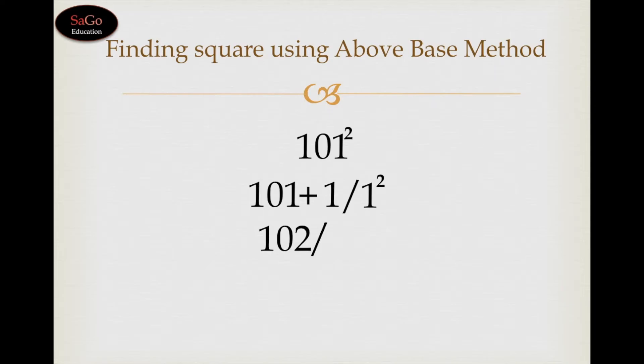Because in the base 100 there are two zeros and the square of 1 has only 1 digit, just to balance the number we will prefix 0 before 1. Write 01.